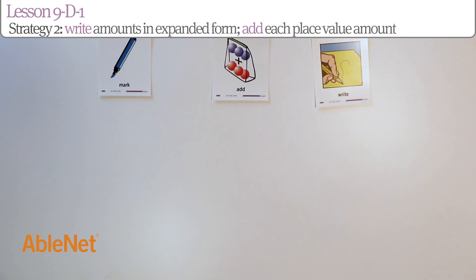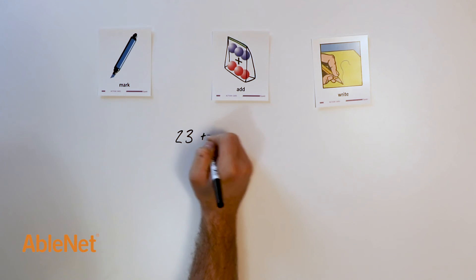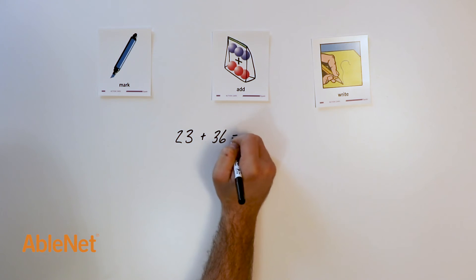For our second strategy, we're going to write the amounts in expanded form, then add each place value amount. I will start by writing the amounts in expanded form.